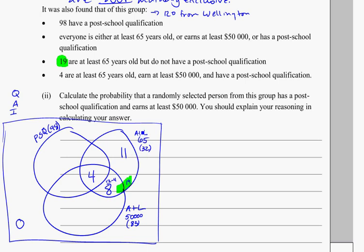And I know that there's going to be, for at least 65, a total of 32 people altogether. So if I add up 11 plus 8 plus 4, I'm going to get 23, and I know I need 32, so that leaves me with 9 people at the top there. So I know, again, 11 plus 9 gives me to 20, plus 4 plus 8 gets me to 32 total, and this matches up that I've got 19 shared between at least 65 and at least $50,000, but outside of the post-school qualification.